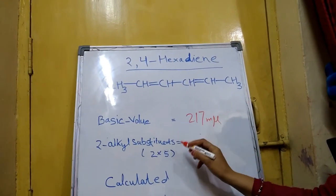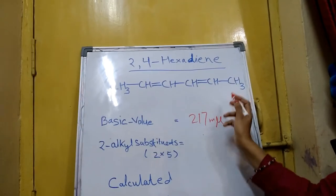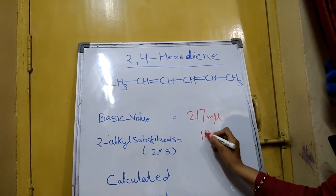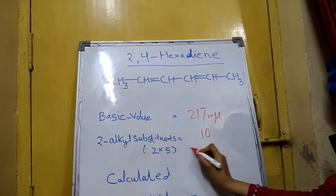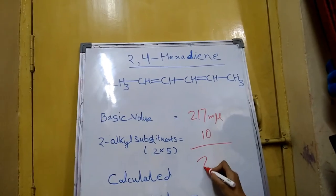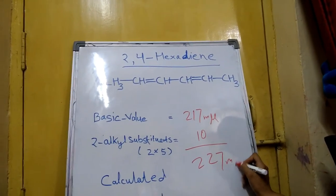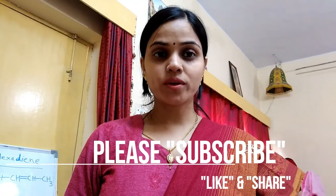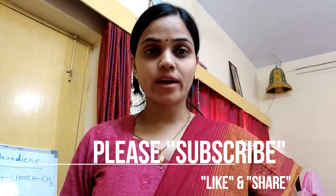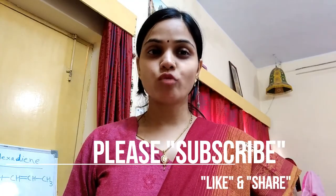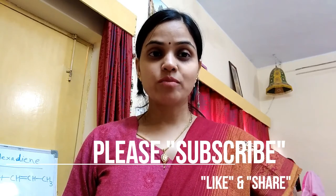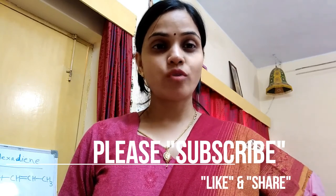There are two alkyl groups, and each alkyl group adds 5 millimicrons, so 5 × 2 equals 10. Therefore, the calculated λ max is 217 + 10 = 227 millimicrons. It should be noted that the calculated value and observed value of absorption can differ by ±5 millimicrons for a compound.